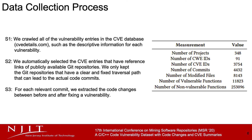First, we collect all CVE entries in the CVE database. Second, we automatically select the CVE entries that have reference links to publicly available Git repositories, keeping only those with clear fixing commit links. Third, each commit is considered as a mini version of a project. We use the commit ID to request the commit histories of the projects and map each mini version to the corresponding CVE entries.